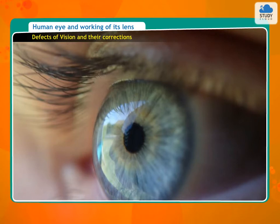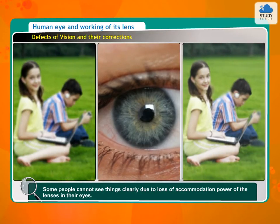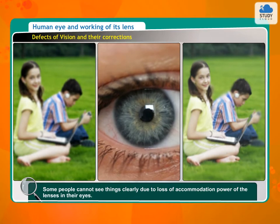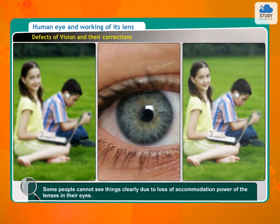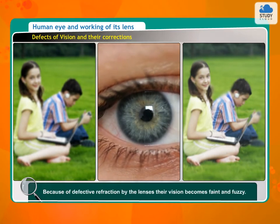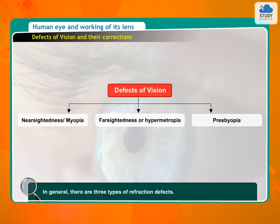Defects of vision and their corrections. Some people cannot see things clearly due to loss of accommodation power of the lenses in their eyes. Because of defective refraction by the lenses, their vision becomes faint and fuzzy. In general, there are three types of refraction defects.